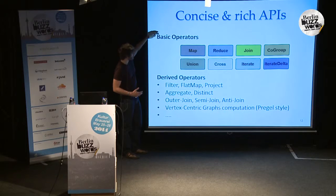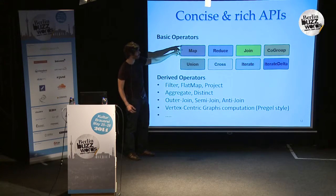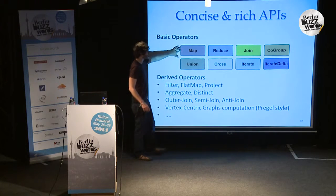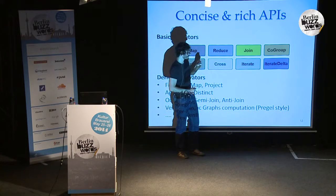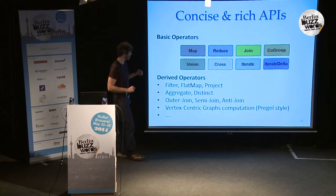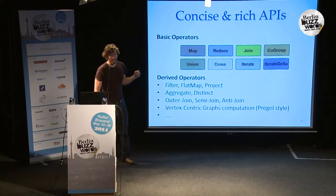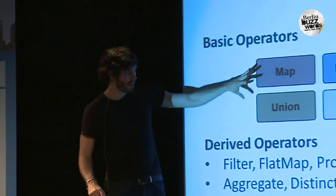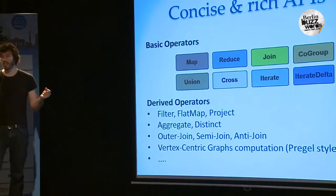The APIs are designed around a rich set of operators. The runtime knows: MapReduce, Join, CoGroup, Union, Cross, Iterate, and Iterate Delta. The first six you'd probably recognize from Cascading or Spark. Iterate and Iterate Delta are a little special, and I'll talk about them in a bit. In the APIs there are also many derived operators: filtering, flat mapping, projecting, aggregating, duplicate elimination, several forms of joins, and derived operators like vertex-centric graph computations, which are combinations of iterations and co-group and joins.